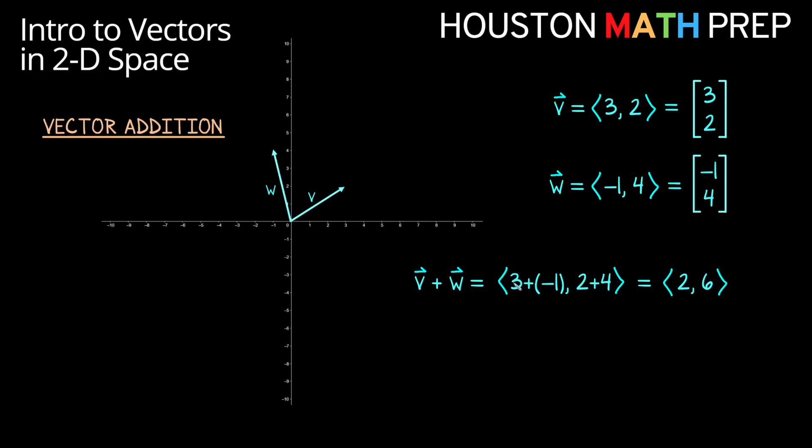So here the 3 and the negative 1 add together, give us 2, and the 2 and the 4 add together to give us 6. You can tell from this maybe that in order for vector addition to make sense, the vectors need to have the same number of entries in them.